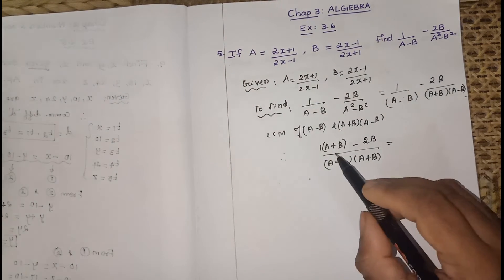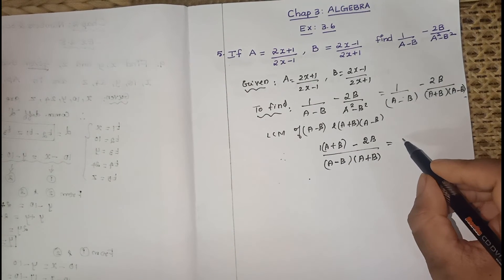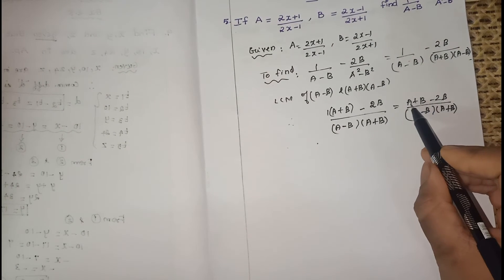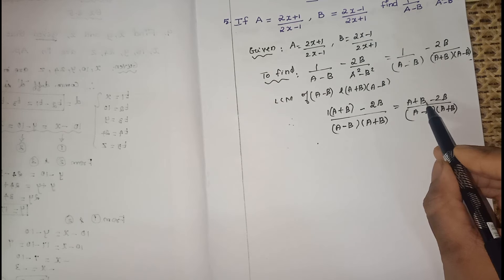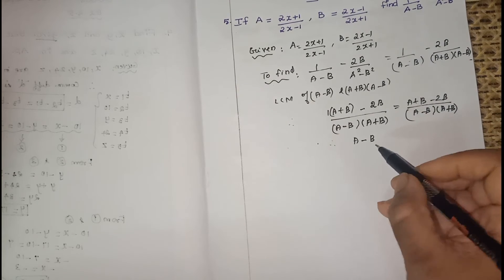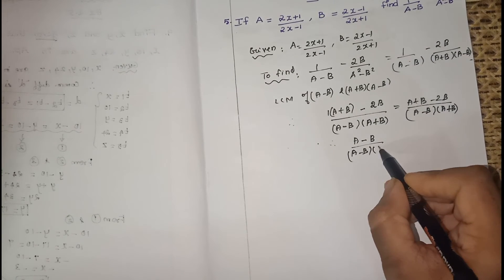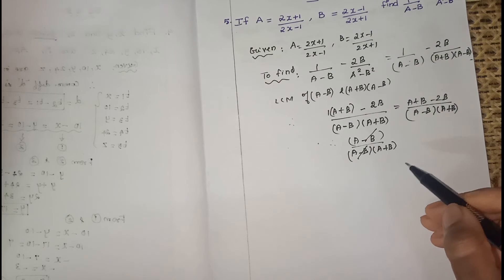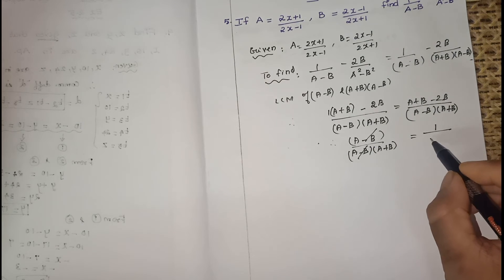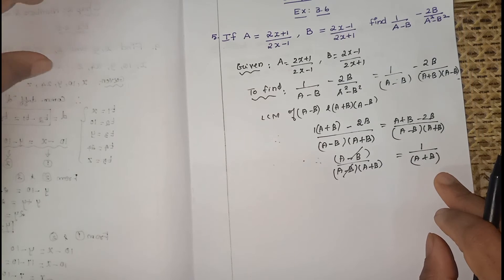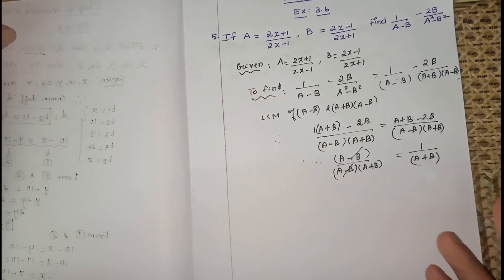So multiplying out: 1 into (A+B) is nothing but (A+B). So we get (A+B-2B) over (A-B)(A+B). Now B minus 2B equals minus B, so the numerator becomes A minus B. This gives (A-B) over (A-B)(A+B). Cancel A-B from numerator and denominator — the numerator becomes 1. So the result is 1/(A+B).